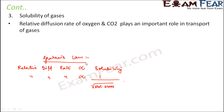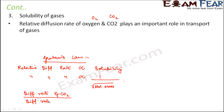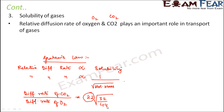Comparing the diffusion rate of carbon dioxide to that of oxygen: the solubility of carbon dioxide is around 22 times more than that of oxygen (varying from 20 to 25 times). When you calculate using Graham's law, the diffusion rate of carbon dioxide comes out to be approximately 19 times more than the diffusion rate of oxygen.